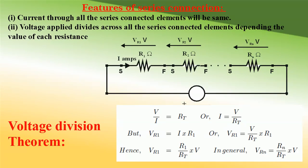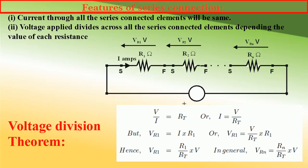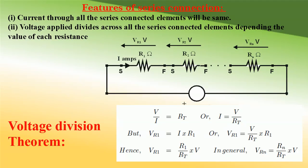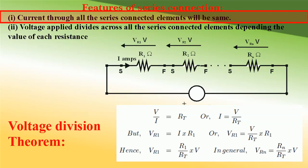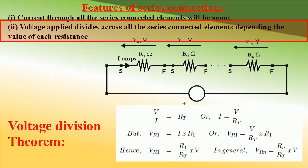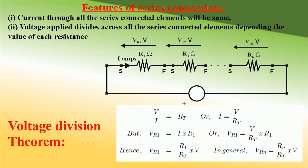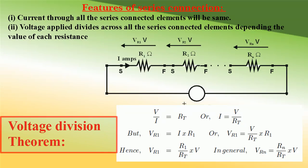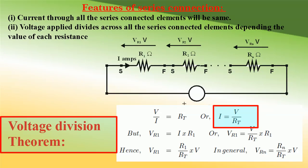Friends, the features of series connection are: number one, the current through all series-connected elements will be the same; number two, the voltage applied across all series elements is divided according to the value of each resistance. To find the voltage across any resistance, we can use RT = V/I, or equivalently I = V/RT.